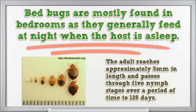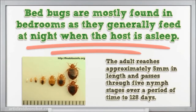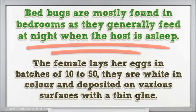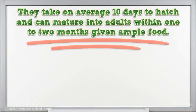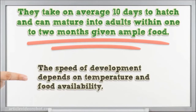The adult is approximately 5 millimeters in length and passes through 5 nymph stages over a period of time up to 128 days. The female lays her eggs in batches of 10 to 50. They are white in color and deposited on various surfaces with a thin glue. They take on average 10 days to hatch and can mature into adults within 1 to 2 months given ample food. The female is then ready to start laying eggs, and the speed of development depends on temperature and food availability.